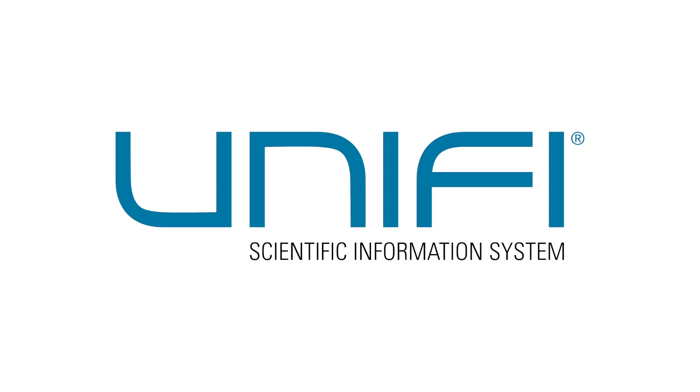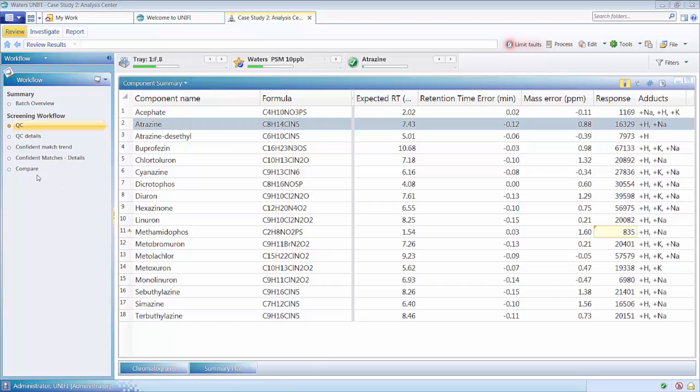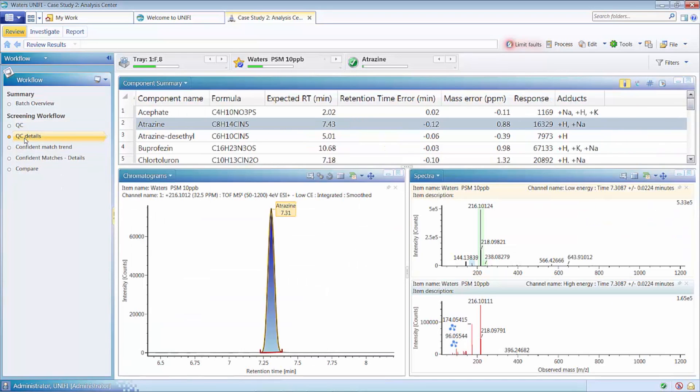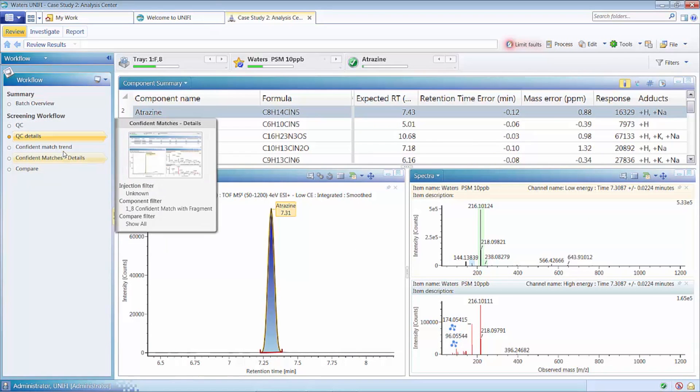The data generated with the Zevo G2 XS QTOF is processed and reviewed using the UniFi scientific information system. UniFi uses a sophisticated apex peak picking algorithm to componentize the data, which reduces the background interferences and brings clarity to the results.